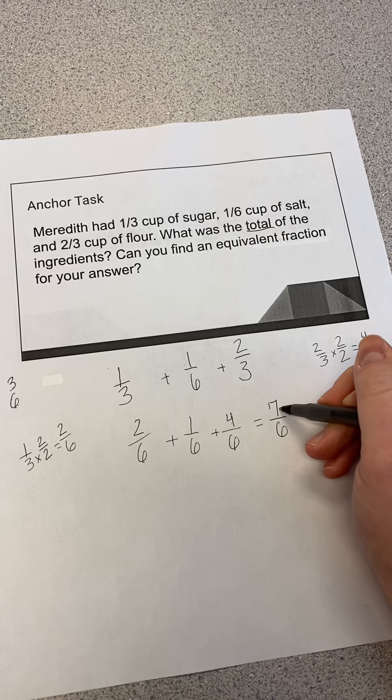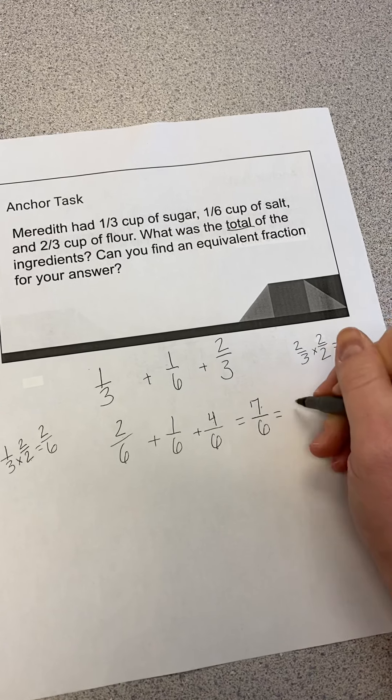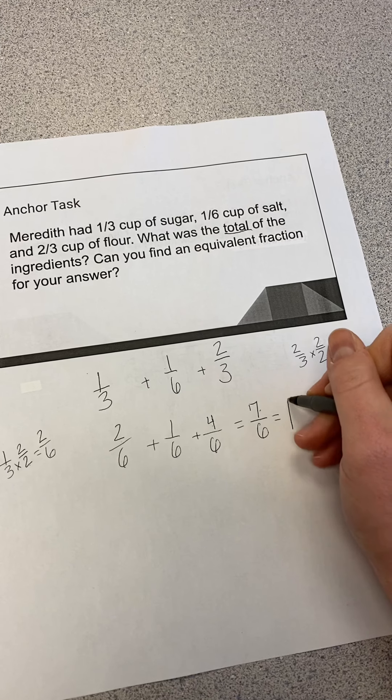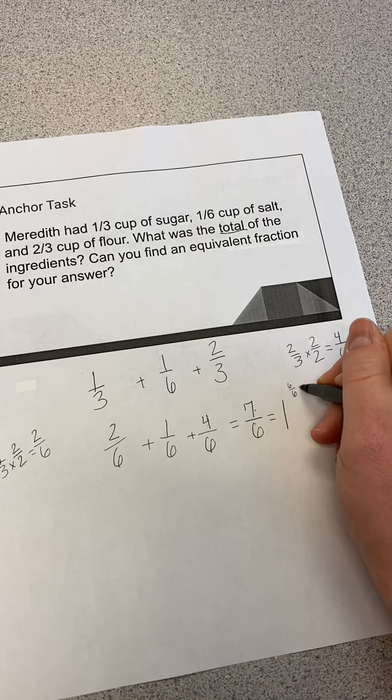Improper fractions have numerators that are greater than the denominator, or I can make this into a mixed number. So one whole is the same as six-sixths. And in order for me to get from seven into six, I would need to take one away. So then I would have one and one-sixths as my equivalent fraction. That would be a mixed number that's the same value as my improper fraction. So the total ingredients is one and one-sixths cups.